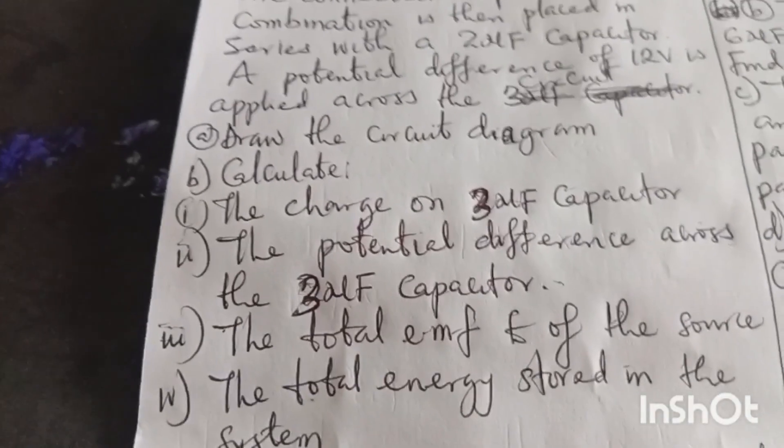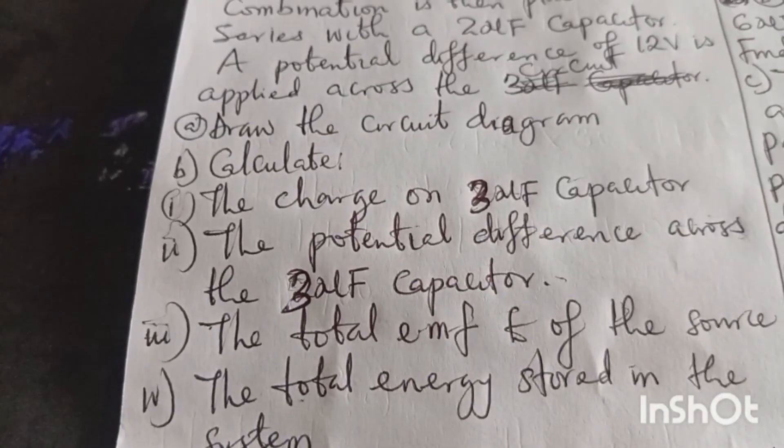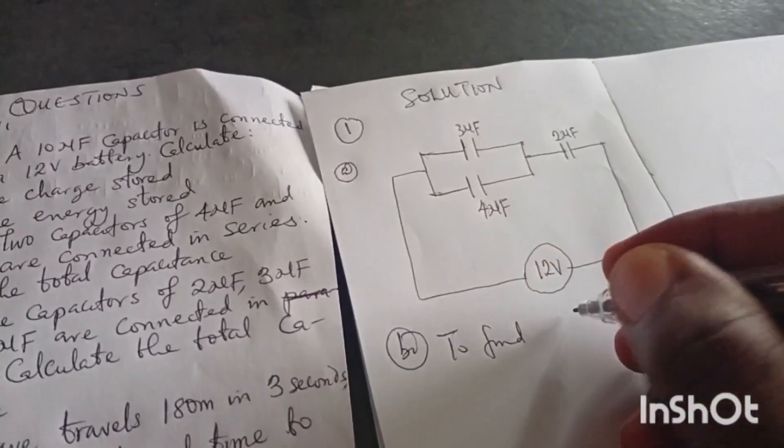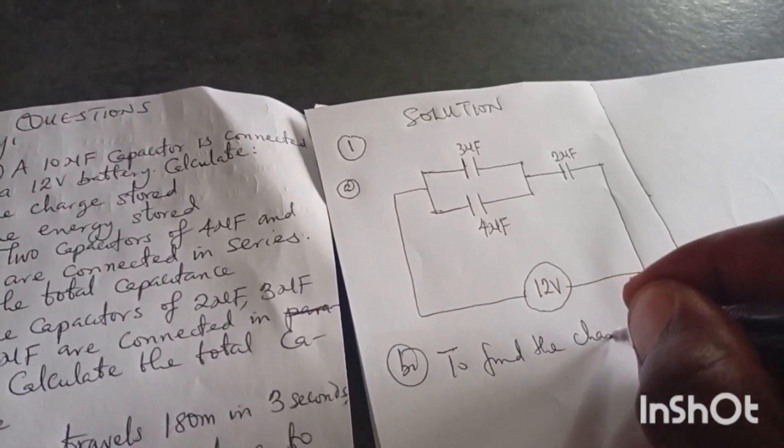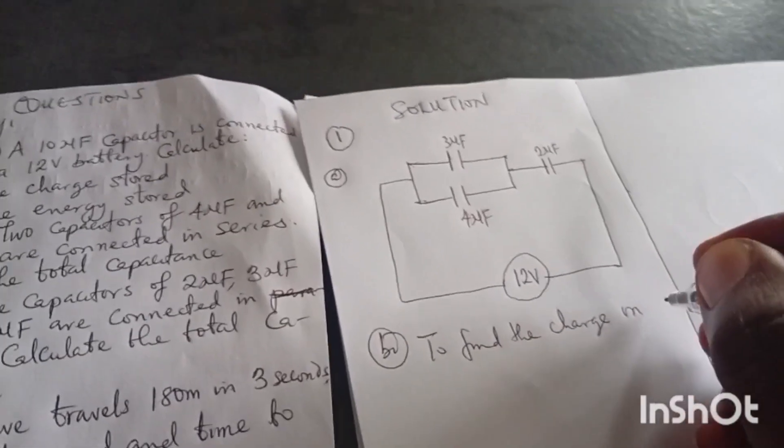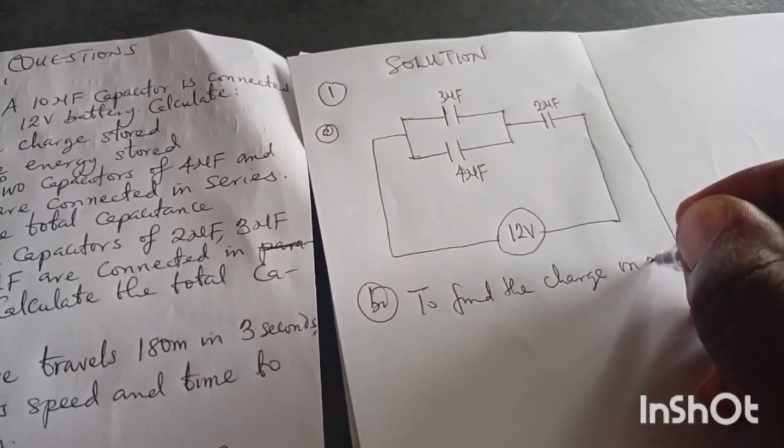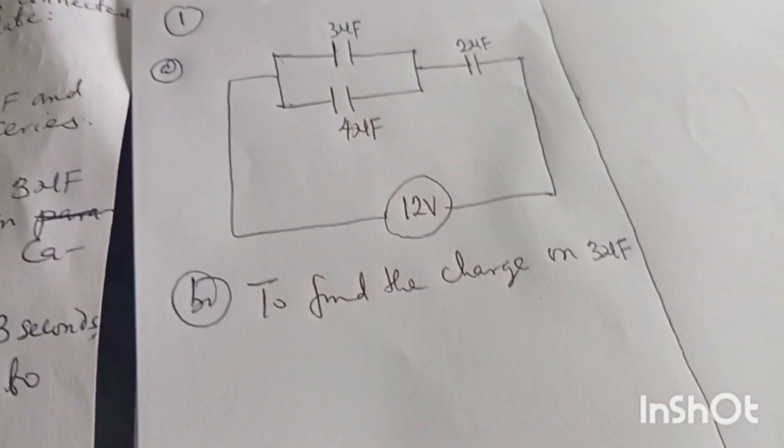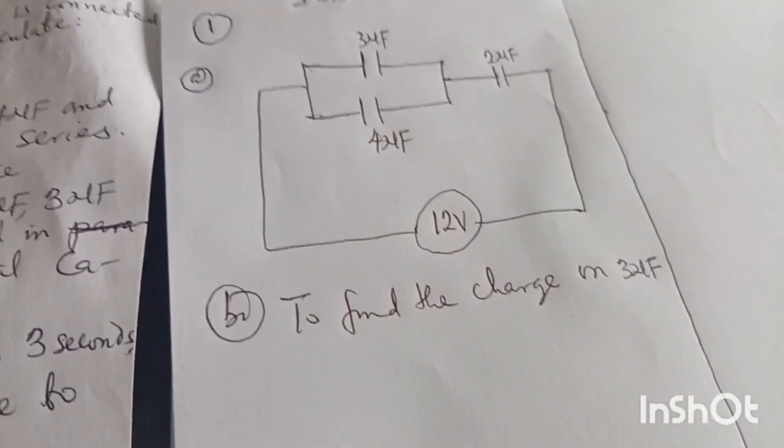We have settled number 1a. Now 1b said that we should calculate the charge on 3 microfarad capacitor. Now let's see, 1b is to find the charge on 3 microfarads.